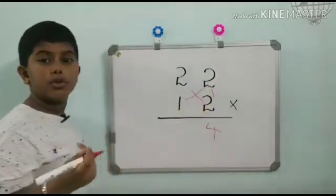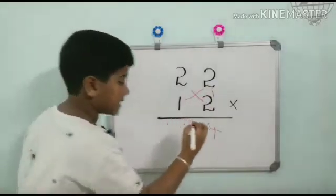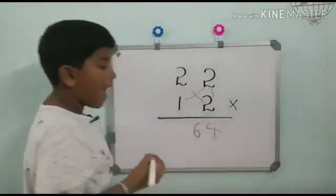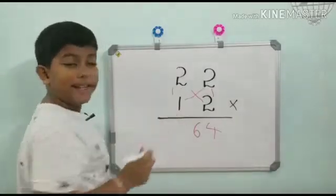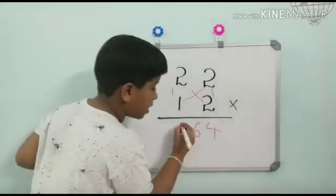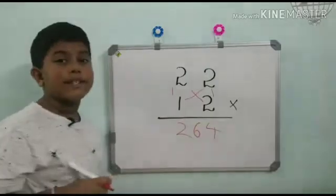So 4 plus 2, 6. And now upwards, that is 2 times 2, 2. So the answer is 264.